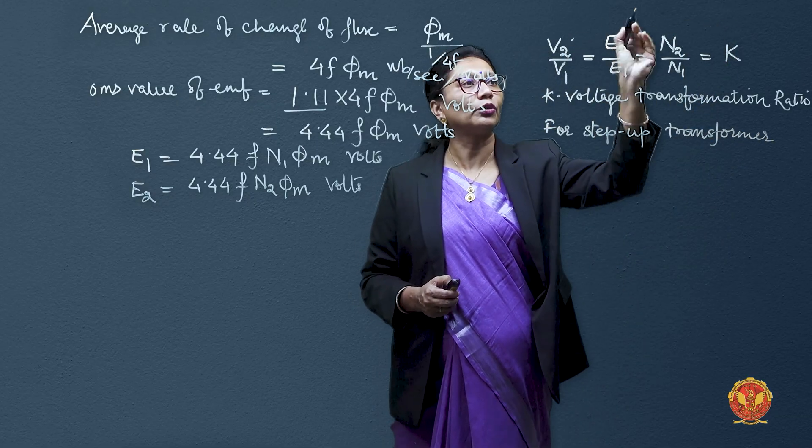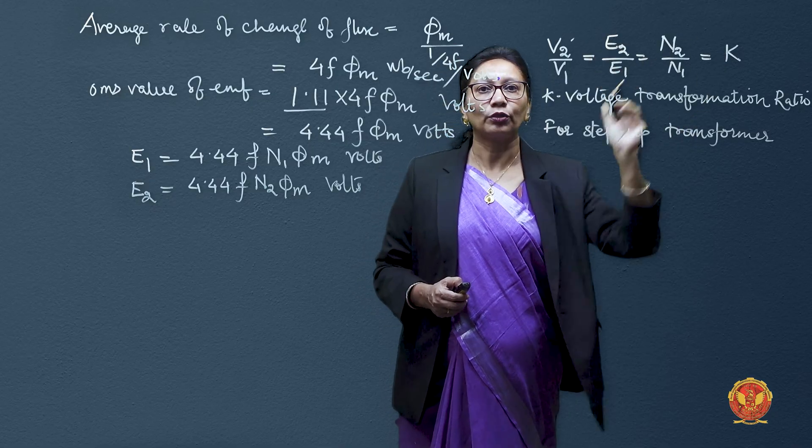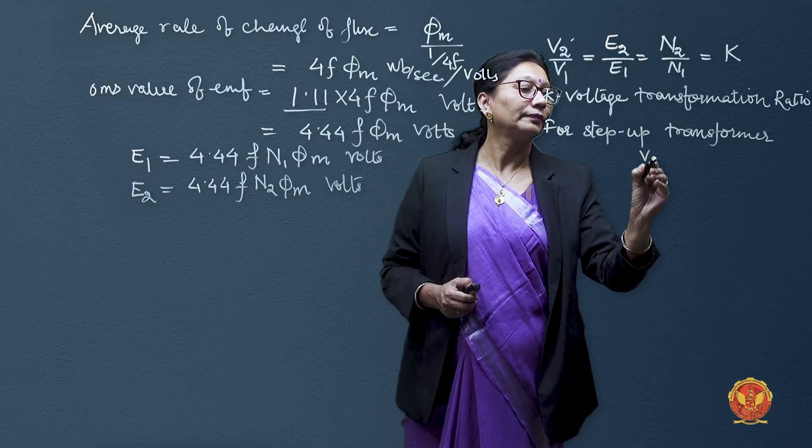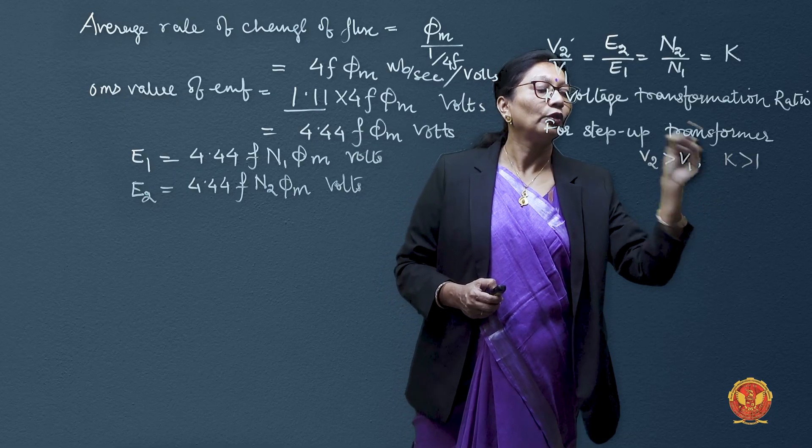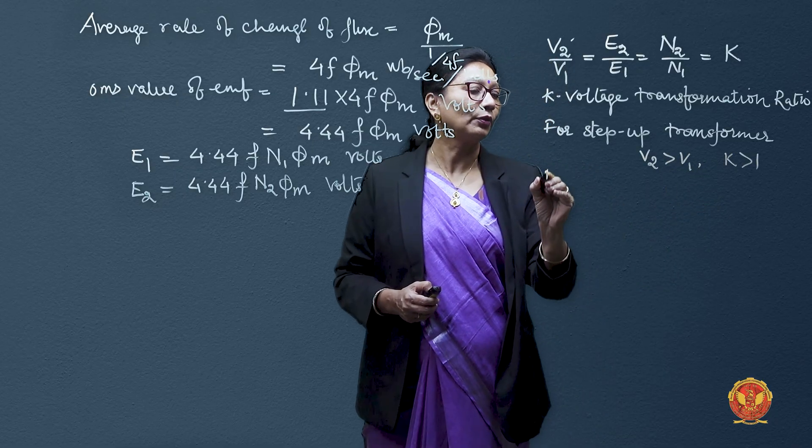Your V2 or E2 should be higher, so K should be more than 1. And on the same lines, for a step-down transformer...